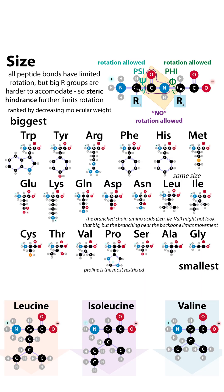Iso means same or equal. Isoleucine and leucine have the same molecular weights, the same size, but they have different shapes, and the shapes have impact on things like protein folding. In isoleucine and in valine, the branch is close to the backbone, which makes it hard for the backbone to rotate, and therefore restricts where these amino acids can be located inside of proteins.